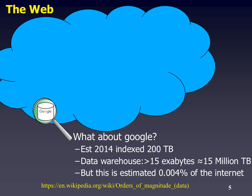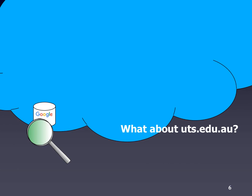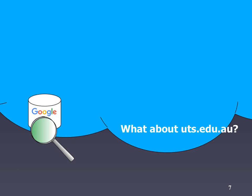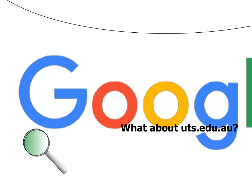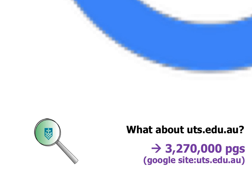There's a huge amount of stuff out there that Google does not index — for example, the dark web or the deep web, or the web hidden behind corporate firewalls like at UTS. So a large amount of data has to be stored somewhere. What about UTS.edu.au? If you use Google with site:uts.edu.au, you get 3.2 million pages.